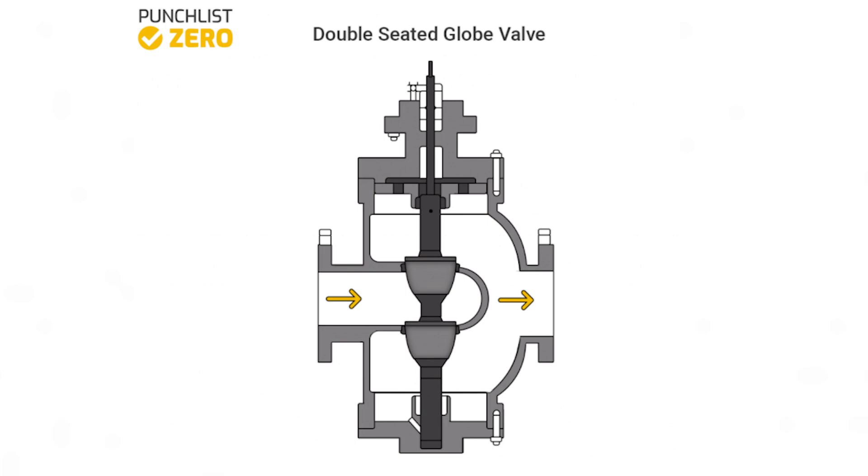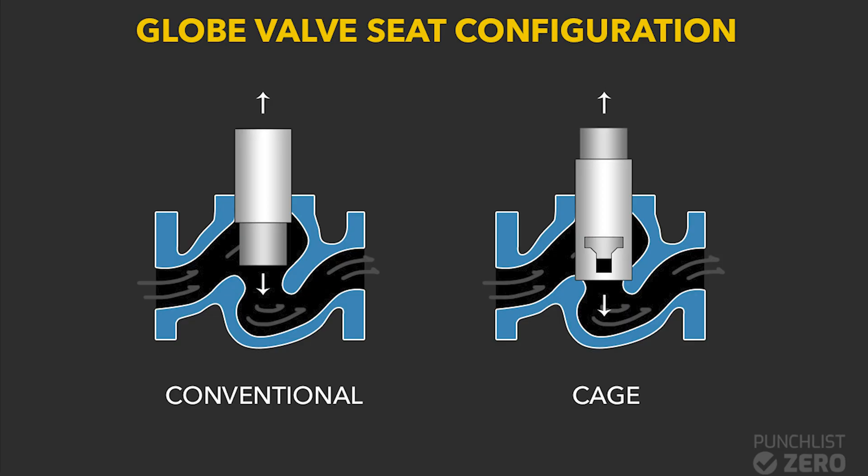In a conventional globe design, the process media directly contacts the disc. In a cage guided design, the cage isolates the plug from pressure and deflection. The cage guided design is not appropriate for viscous media, as the cage can become plugged.